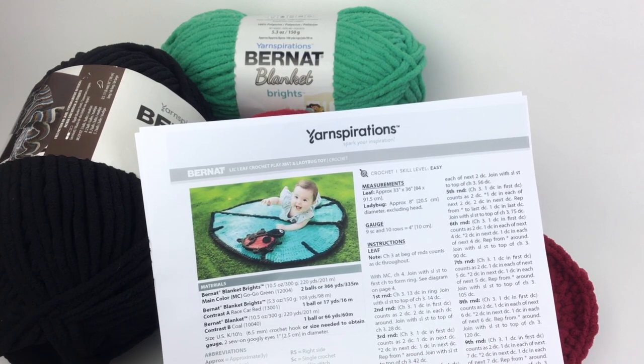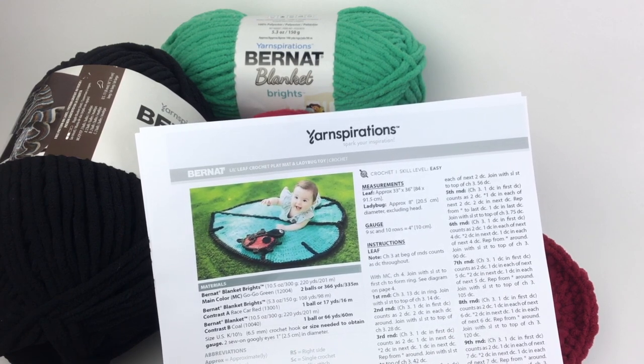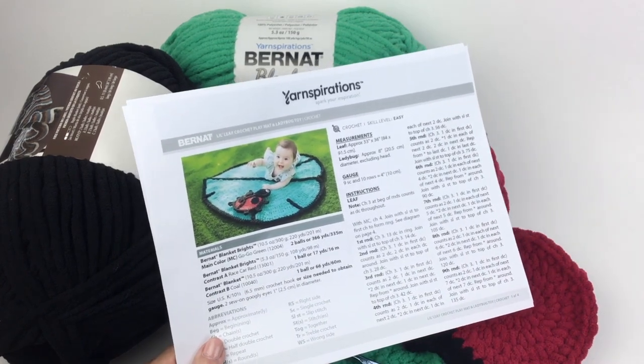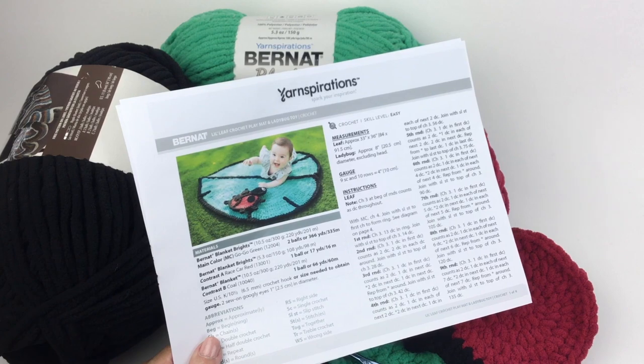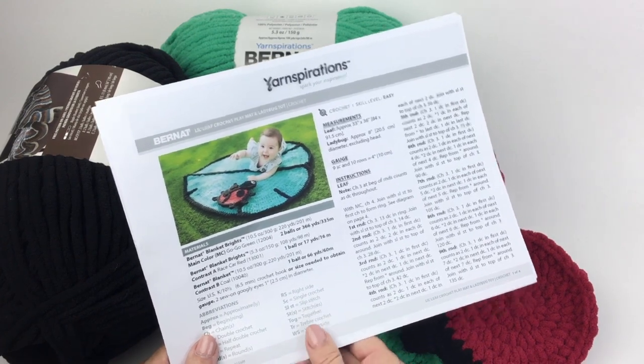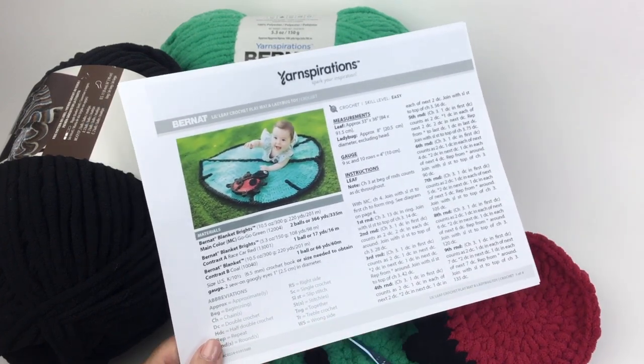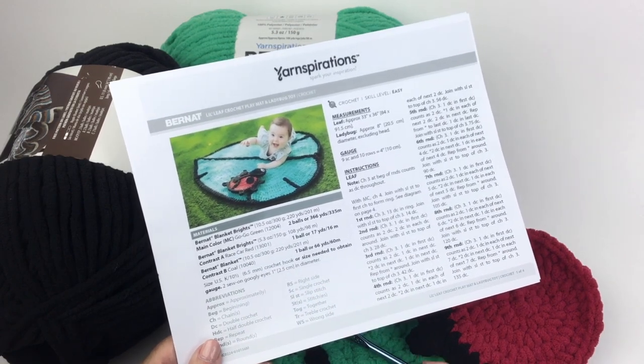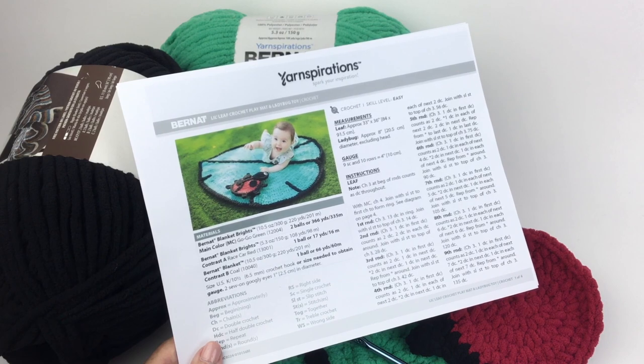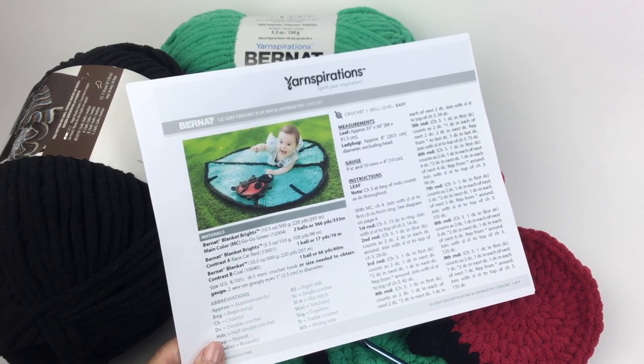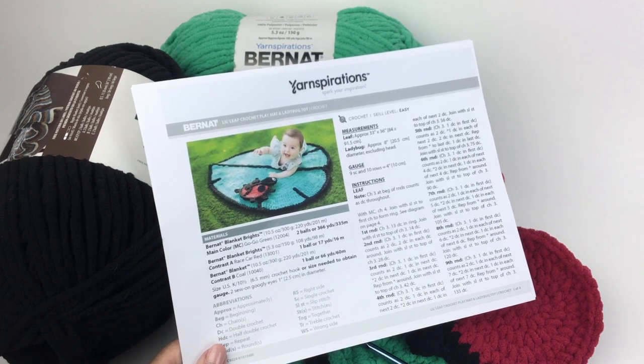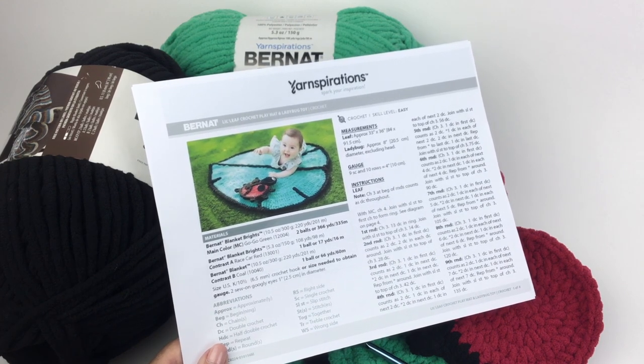To make this project, you're going to need Bernat Blanket Brights in the main color, which is the Go Go Green, and the contrast colors are Race Car Red and Coal. You're going to need a size USK 10.5 or 6.5 mm crochet hook, or size needed to obtain gauge, and I will say that gauge is not critical in this pattern. You want to be comfortable using the blanket yarn, which is pretty thick, so just grab a hook that makes you feel comfortable.